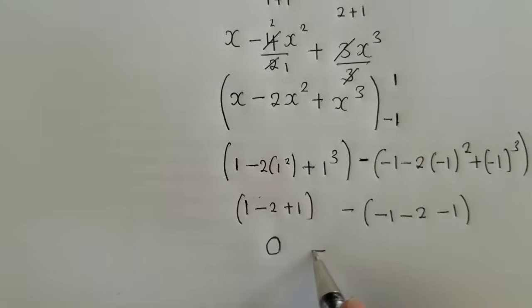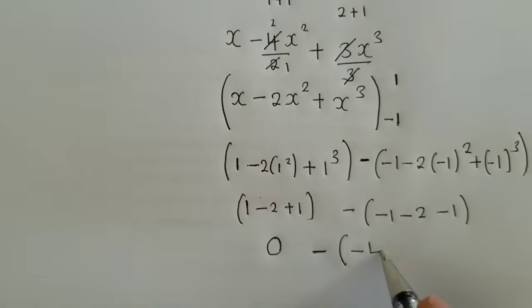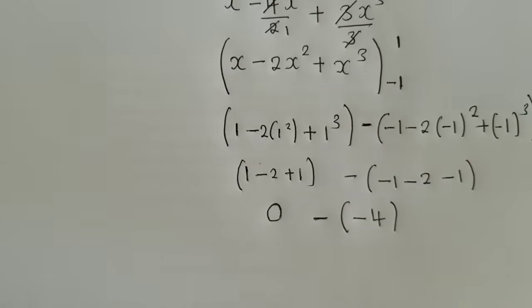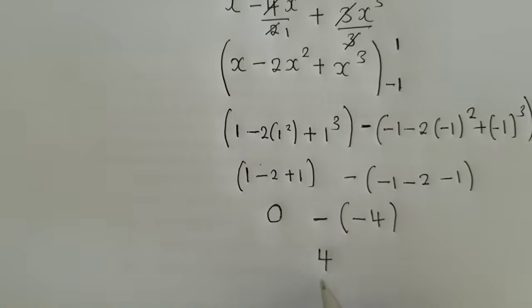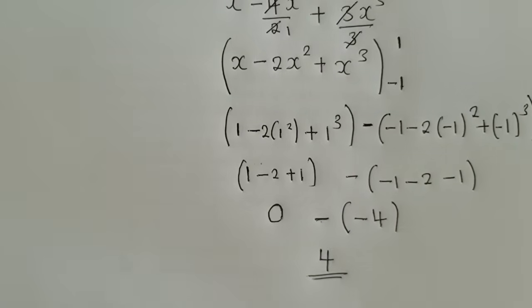For this other one, here when we work out, we shall get a negative 4. So finally, our final answer will just be a 4. This is a negative, a negative is giving us a positive 4. Let's go now to question B and see what we can get out of question B.